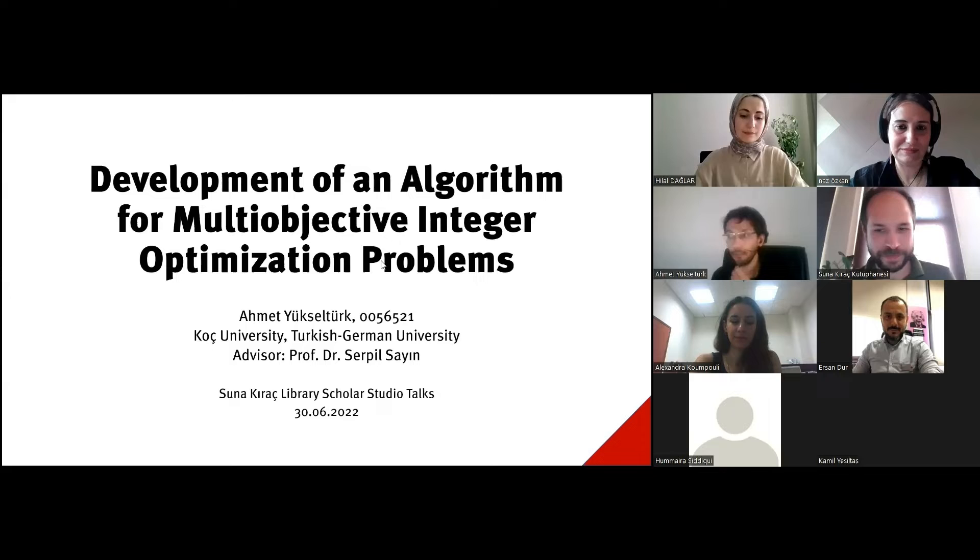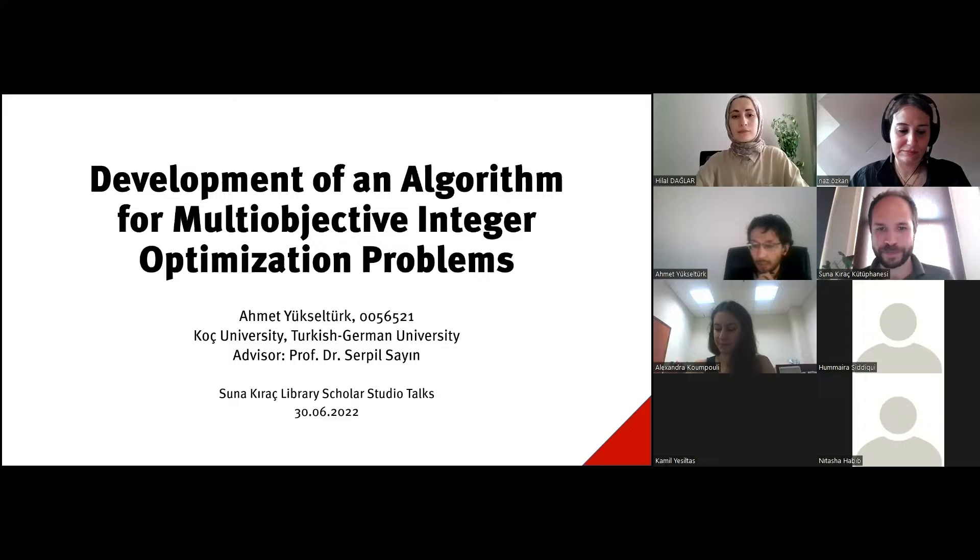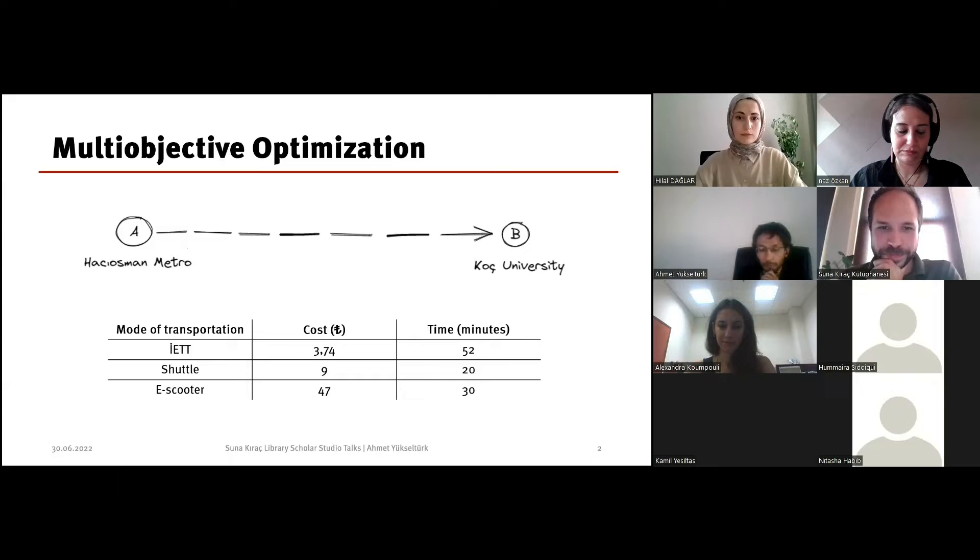Thank you. I'm Ahmet Yükseltürk and my advisor is Sarpil Sayin at Koç University. I will start with some definitions. What is optimization? Optimization means finding the optimum solution. Optimum comes from Latin and it means the best. We have a criteria, we have an option set, and we select the best one.